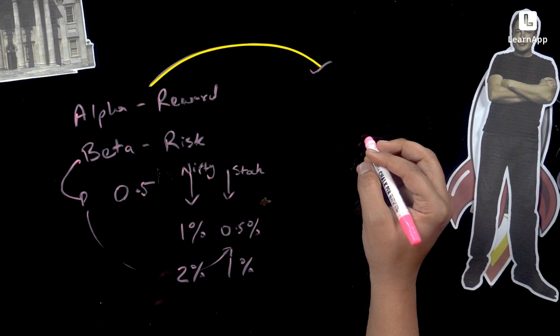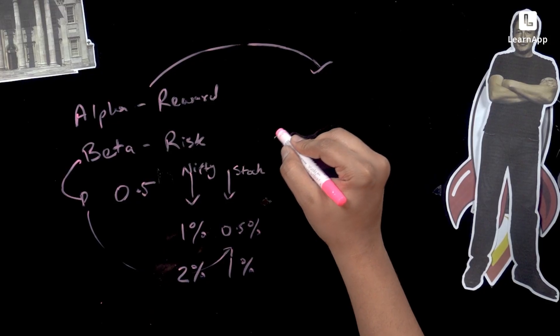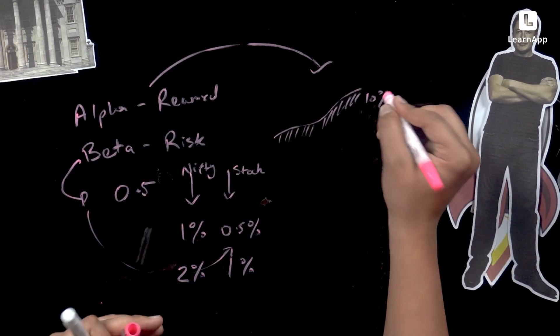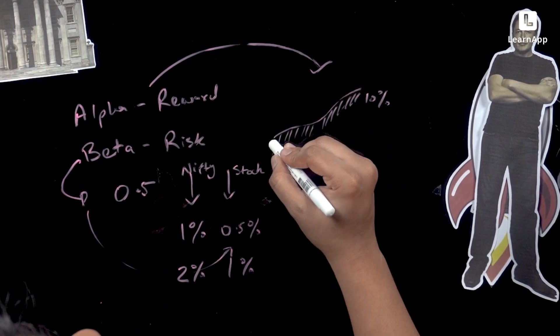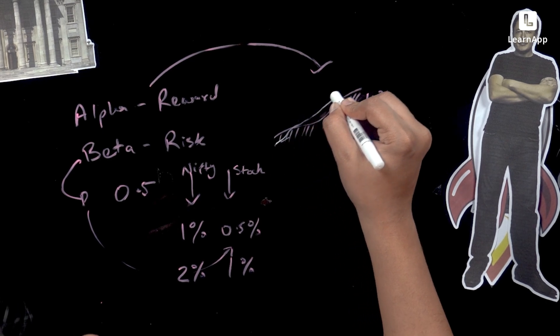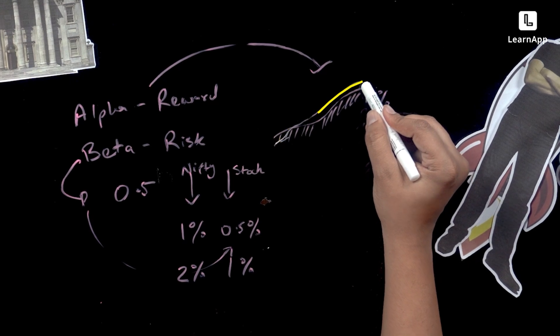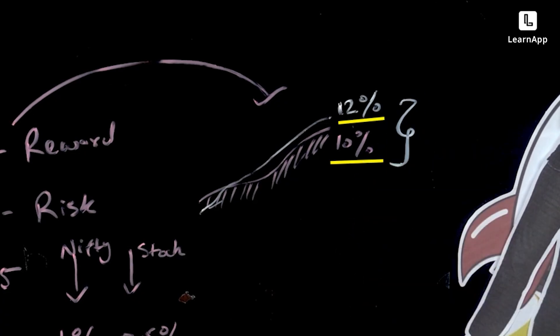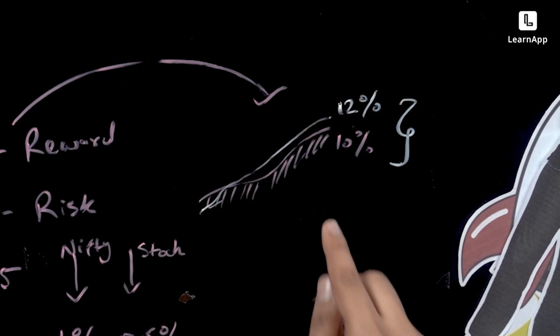Now let's talk about alpha. Alpha is very simple — let's say Nifty has gone up and the Nifty return was, for example, 10%. Your stock started under 10%, underperforming, but then did well and came in at 12%. The difference between Nifty and your stock is the alpha. So if your stock is at 12% and Nifty is at 5%, the alpha is 7 — meaning you've done 7 percentage points more than Nifty. That's all it is, and it's obviously measuring reward.